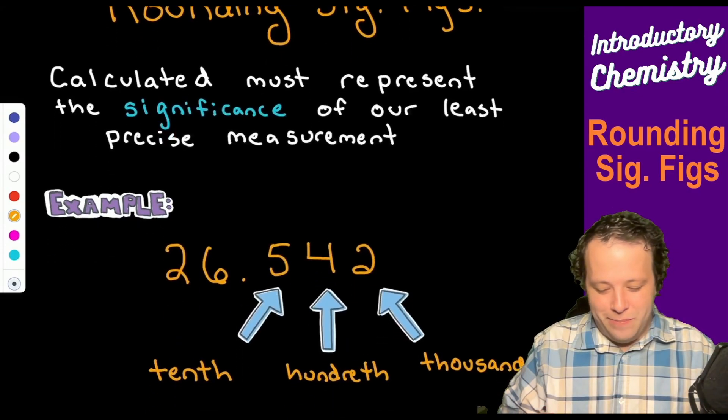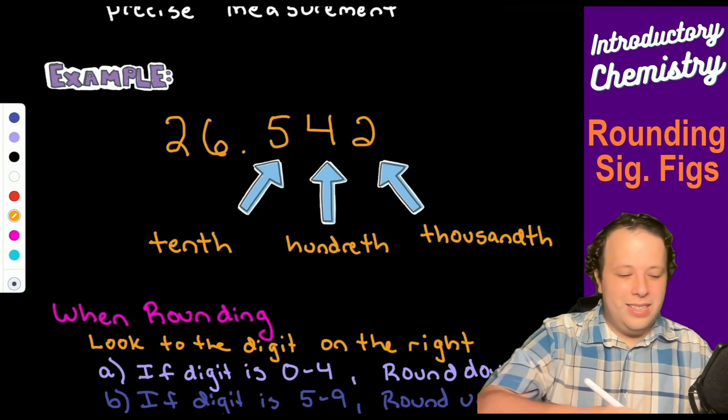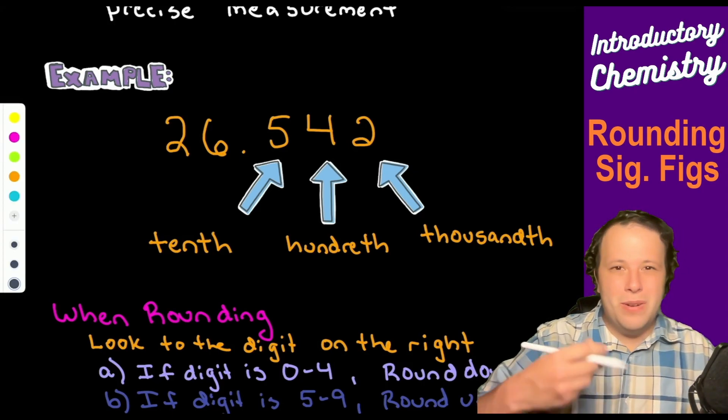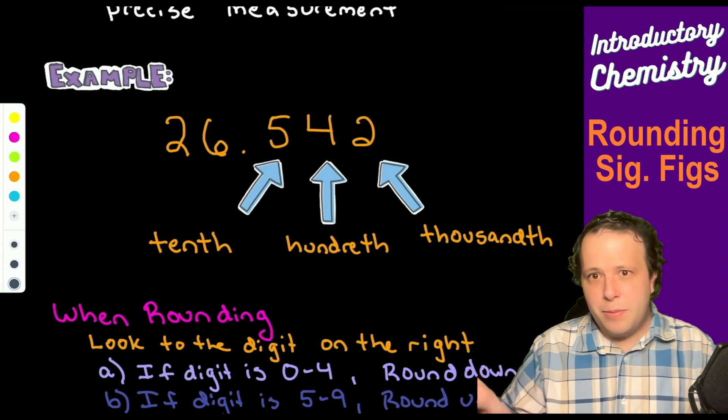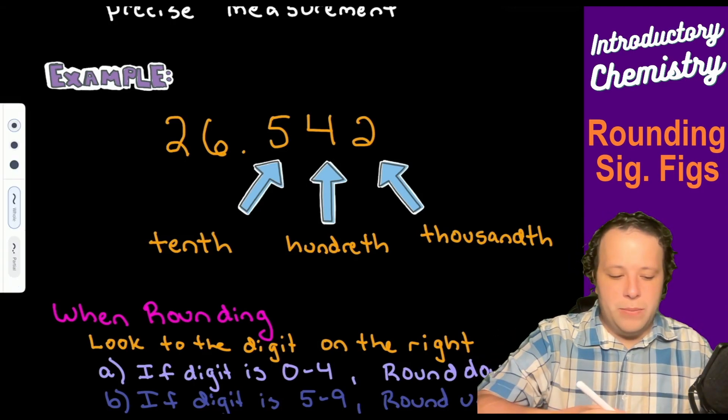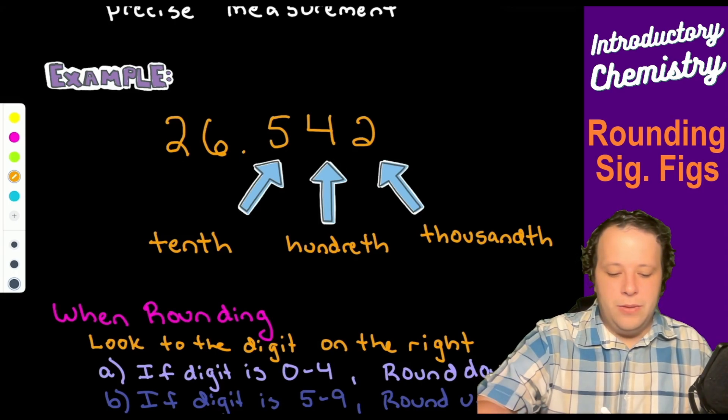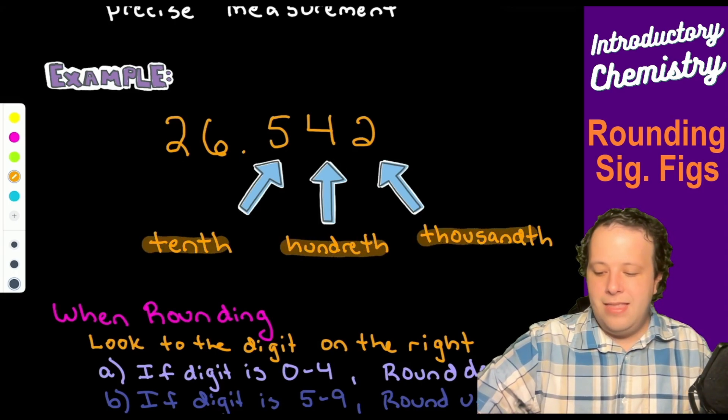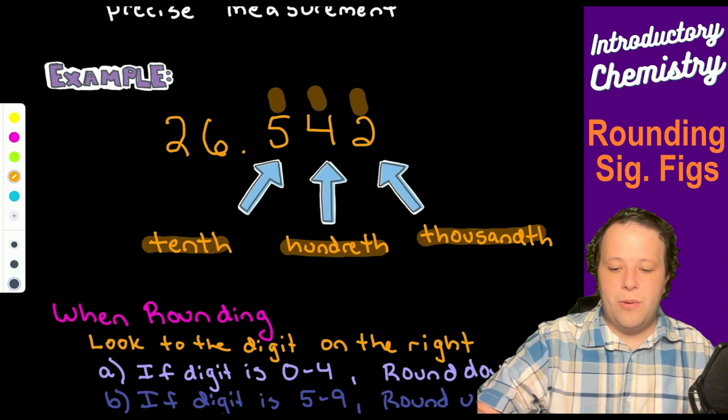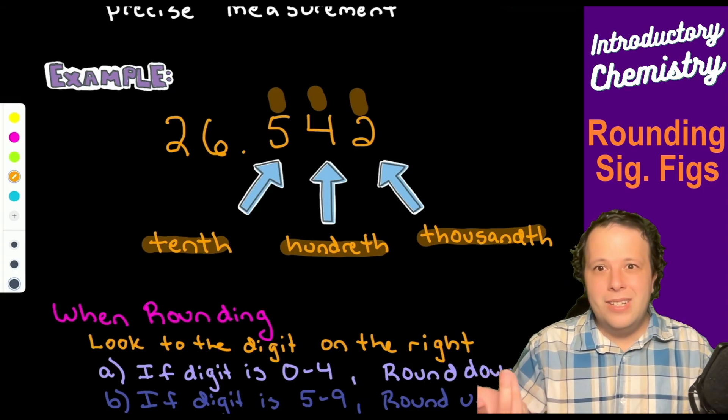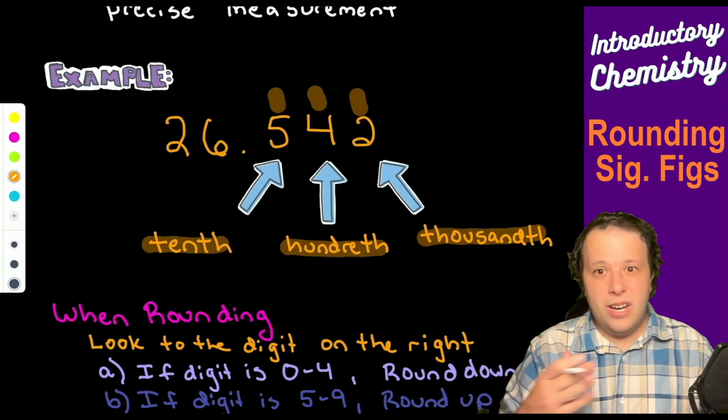Let's take a look at an example. If I have the following number, 26.542, and if we wanted to label all these different numbers, remember our places of a decimal - usually this is what we're typically rounding most of the time in chemistry. These are the tenth place, the hundredth place, the thousandth place. That little 'th' just tells you it's after the decimal, so it's the first, second, or third position.